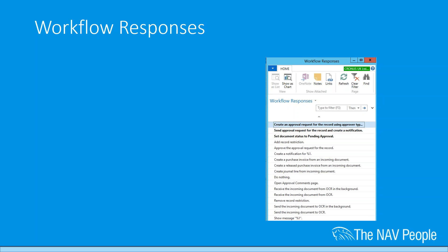A workflow step requires both an event and a response. Examples of responses include 'restrict a record,' 'send an approval request,' or even 'do nothing' — which may be useful in some scenarios. These responses let you do lots of things with your workflow, making it really flexible and powerful.